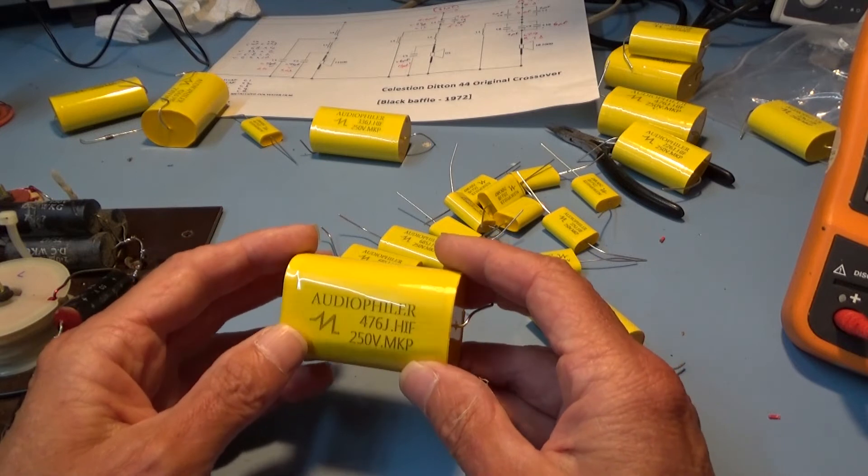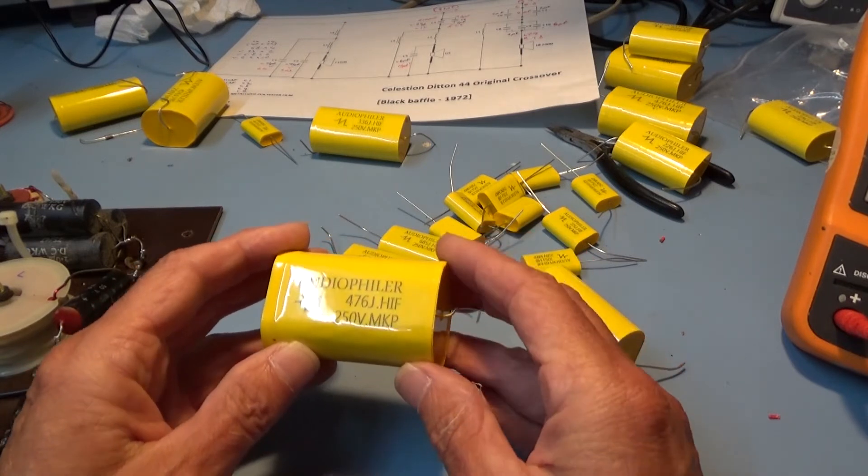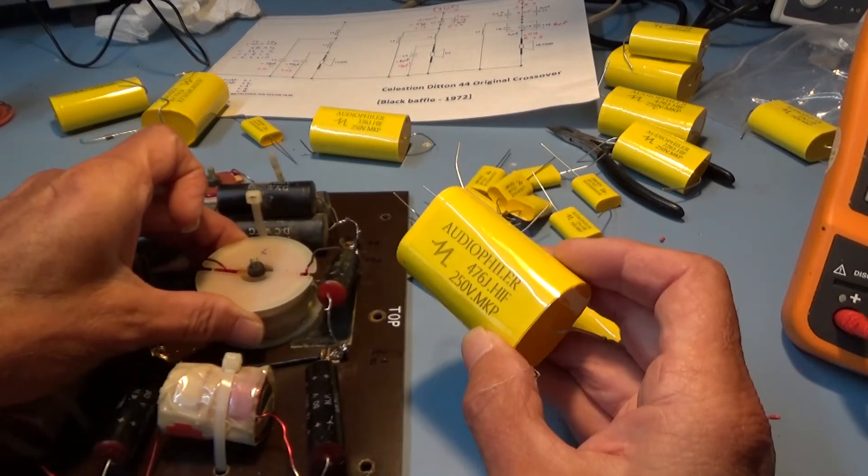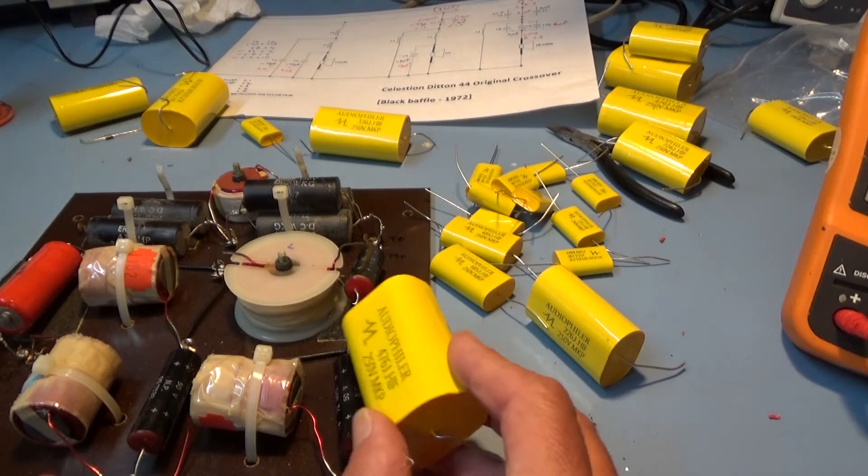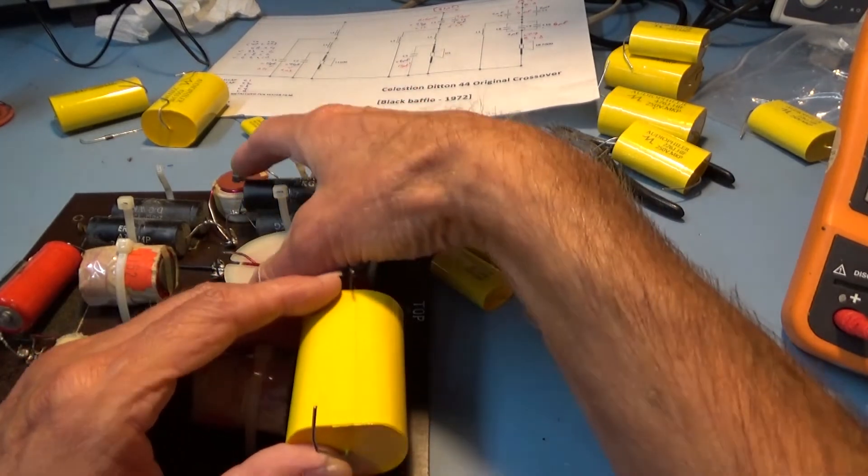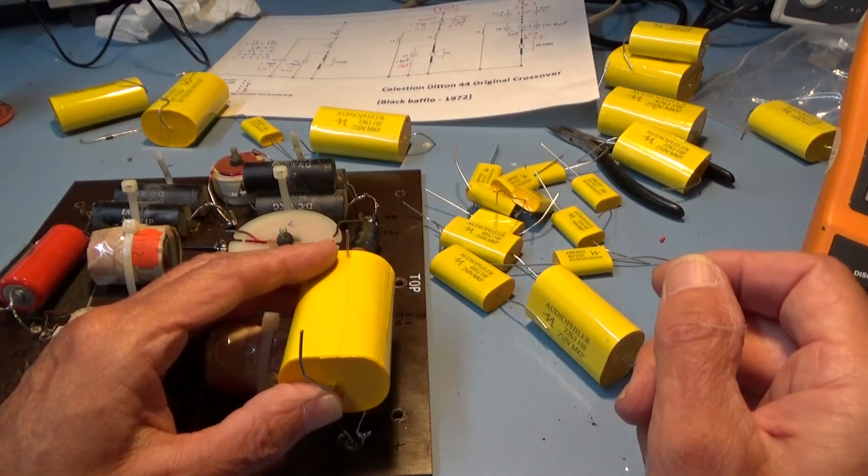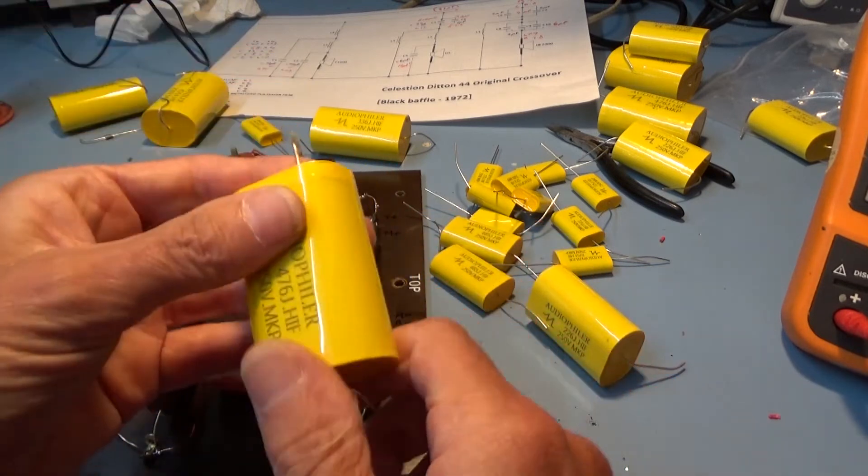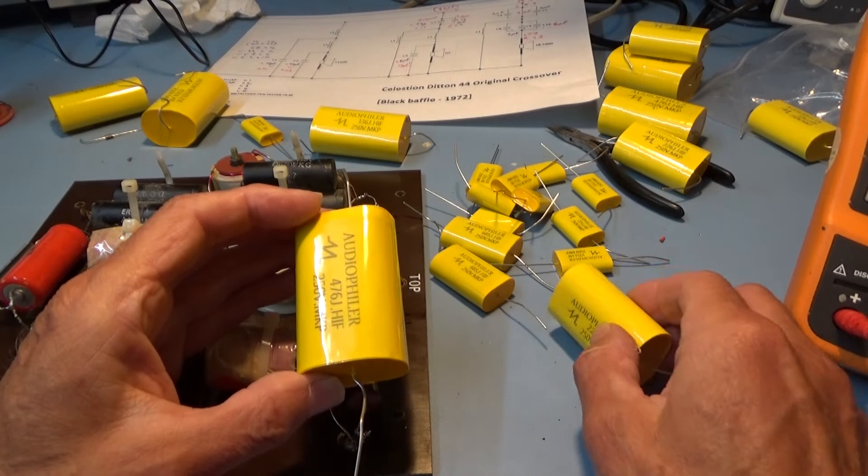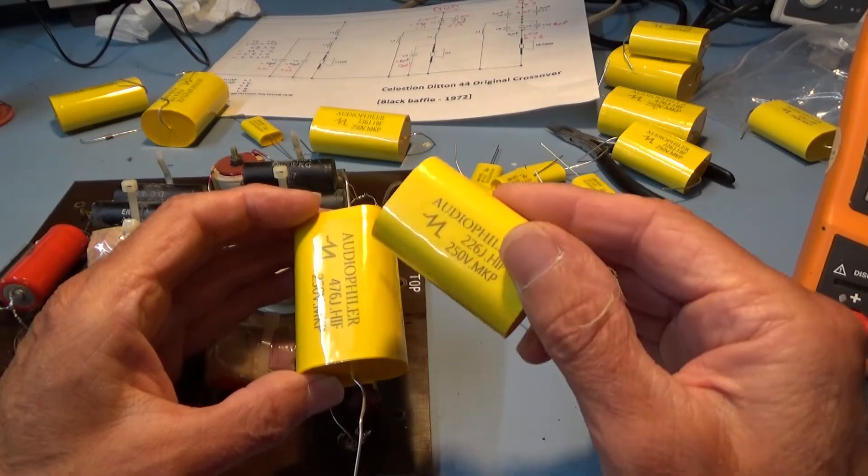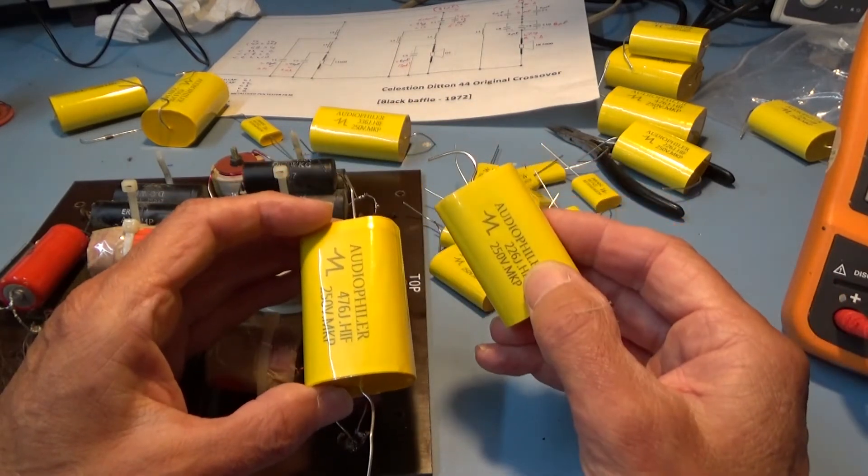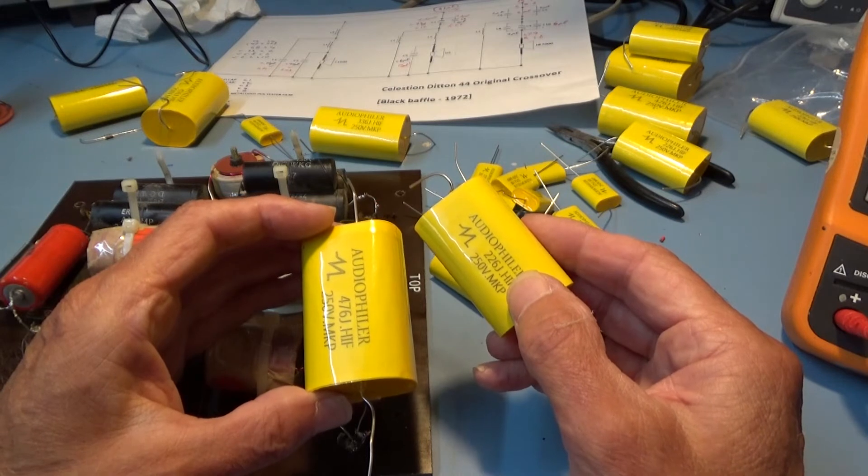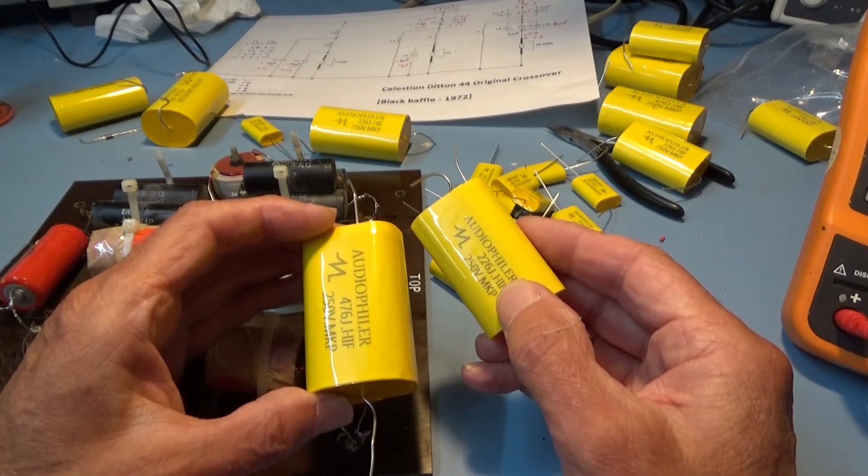And they are big. That's a 47 microfarad, and it's going to have to go in there somehow on the board. I think it will go in, it's just a bit bigger than I was expecting. Not only that, because that was originally a 72, I decided to parallel it with a 22, which equals 69. Which is not too far off 72. I don't think it will make that much difference.